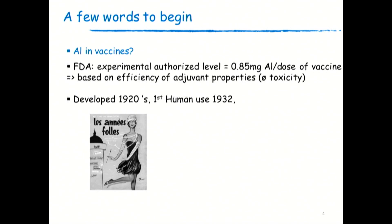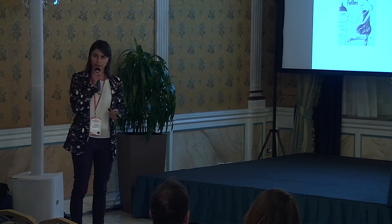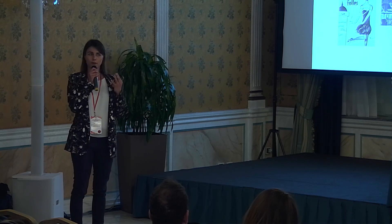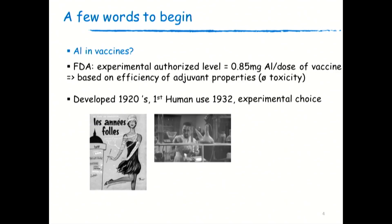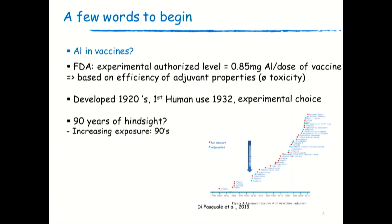Aluminum adjuvants were developed in the 1920s, and the first human use was in 1932 — this was an experimental choice. One of the most famous arguments we can hear, including from our French health ministry, is that we have 90 years of insight, so don't worry. But I think that's not so true, because the exposure to adjuvants — including aluminum adjuvants, especially for babies — increased in the 1990s. This is not truly 90 years of insight.